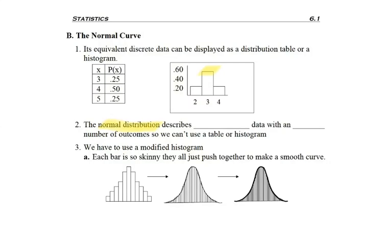The reason is a normal distribution is going to describe continuous data with an infinite number of outcomes, so it won't be possible to use the table or a graph above.